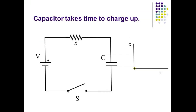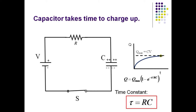When a capacitor is connected to a voltage source through a resistor, it does not charge up instantaneously. Here the capacitor is ready to begin charging as soon as the switch, S, is closed. Upon closing the switch, the capacitor charges rapidly at first, then eventually approaches its carrying capacity, Q equals C times V.